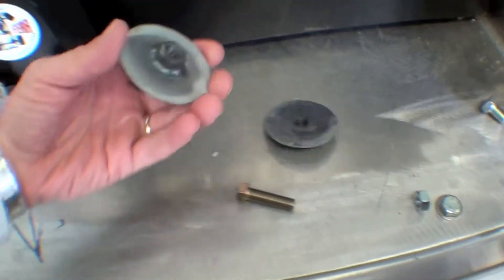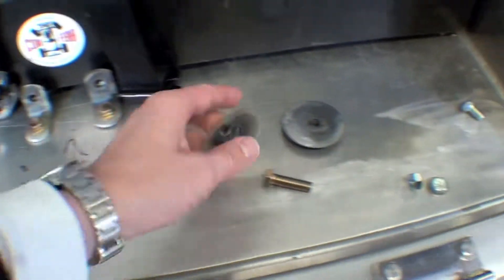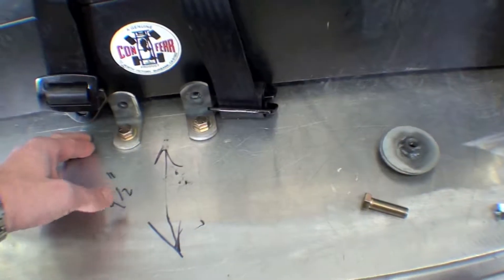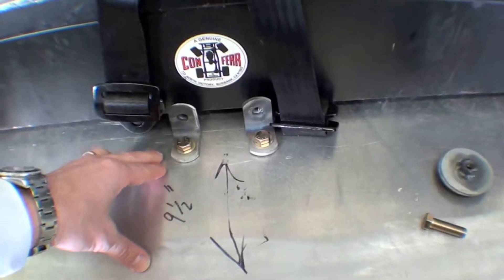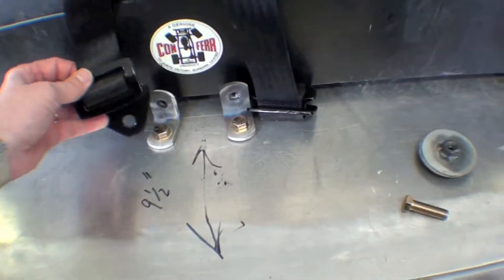We'll put a very large washer on the other side to make sure it doesn't pull through in the event of an accident with just a bolt. It'll go on the other side of the floor, then this will affix to it.